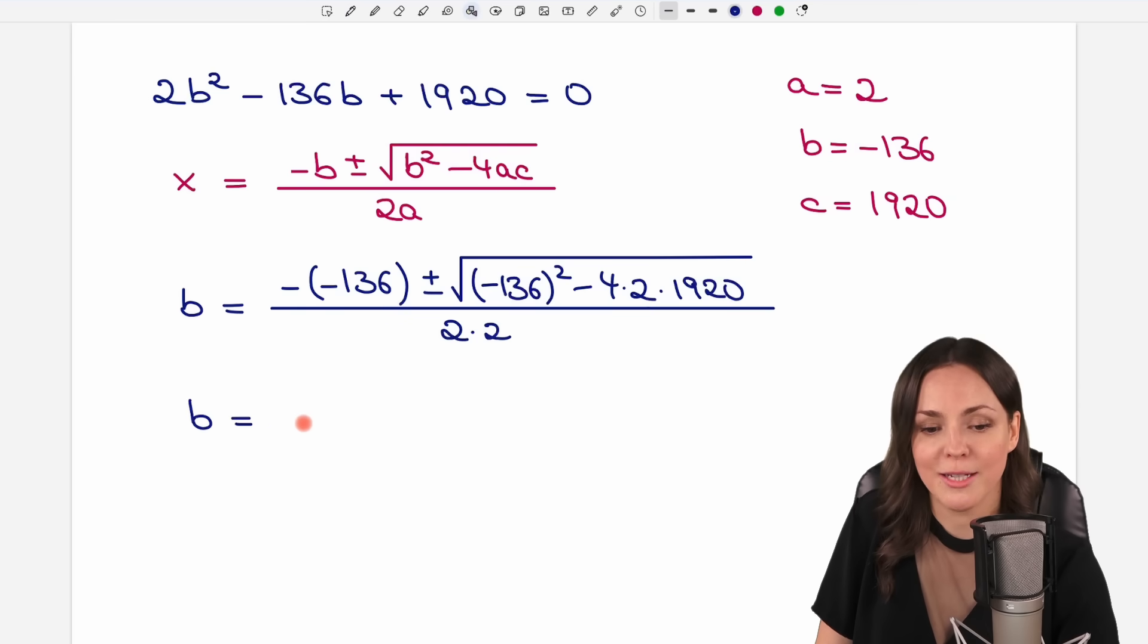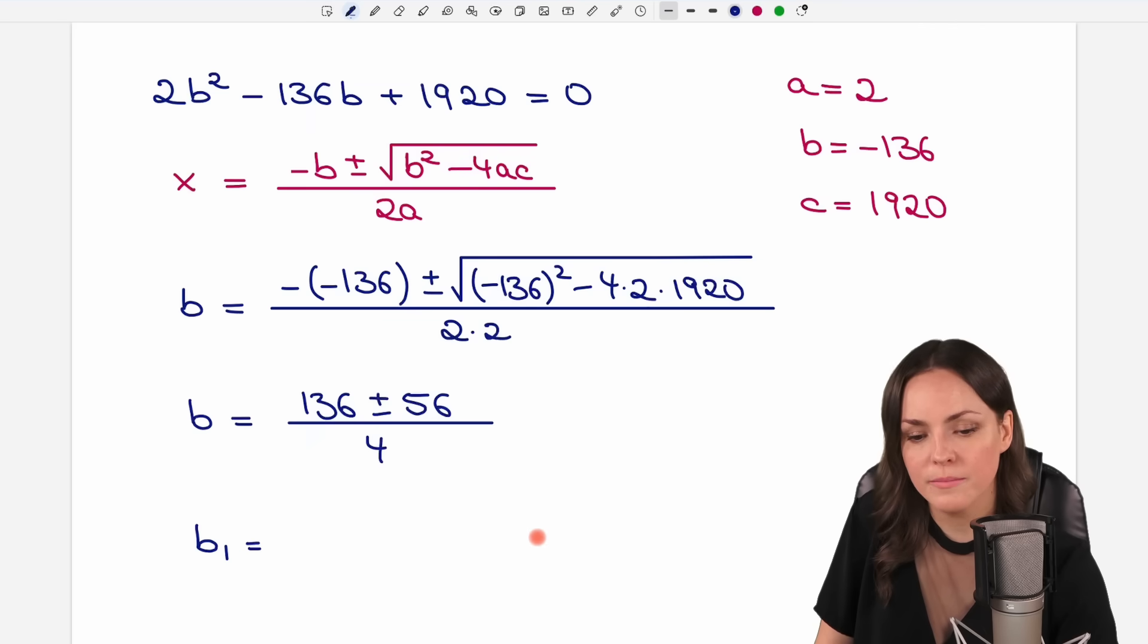Okay, let's get this done with the help of a calculator. So we have minus minuses plus 136. If I calculate this whole thing here, I get a result of 56. And I divide it by 4. So I get two solutions for my B, B1 and B2. My first B is if I take the plus here. So I add these two numbers, I divide by 4, and I get a result of 48. And for my second solution, I take the minus here. So I subtract these two numbers, I divide by 4, and I get a result of 20. So I have two possible solutions for my B.